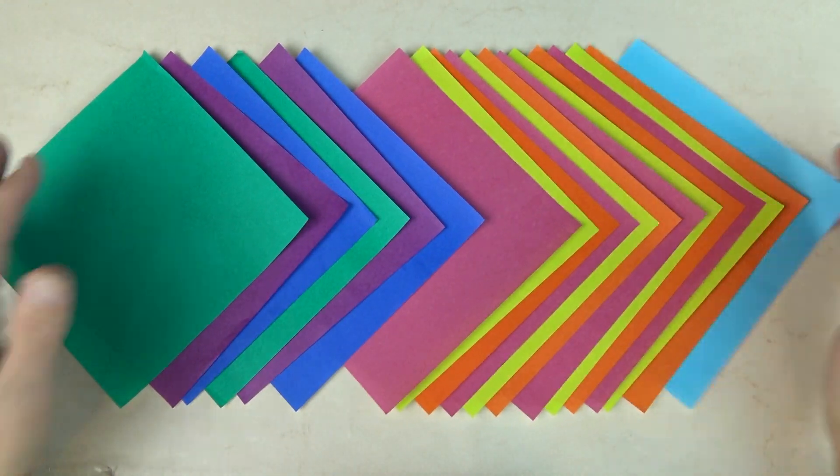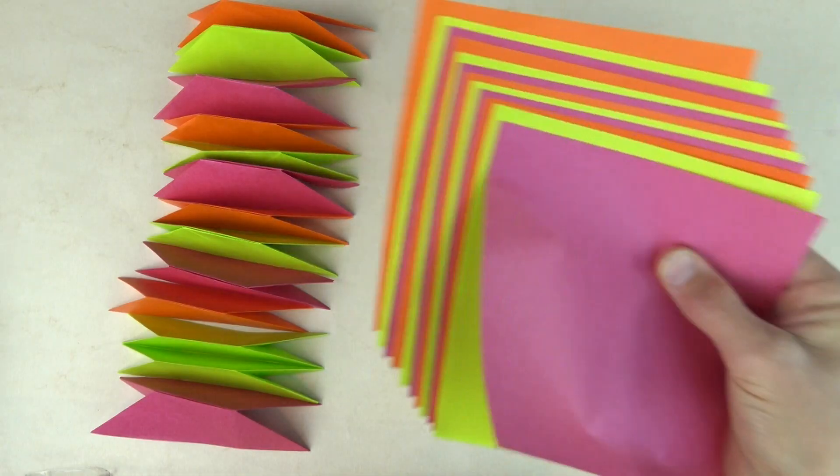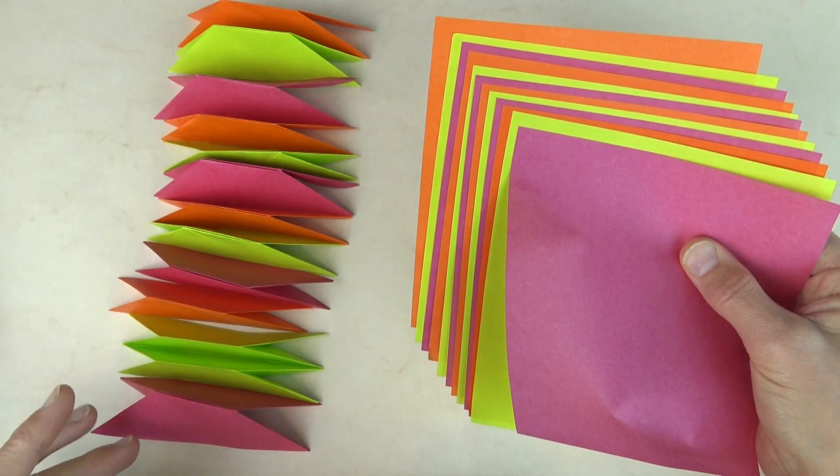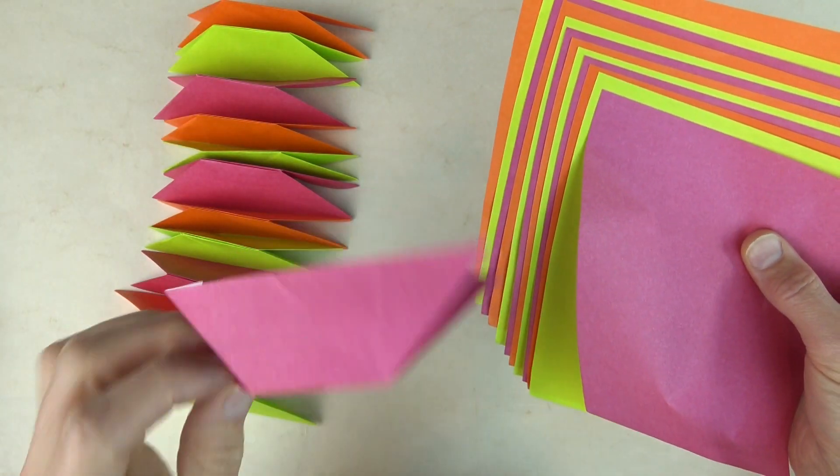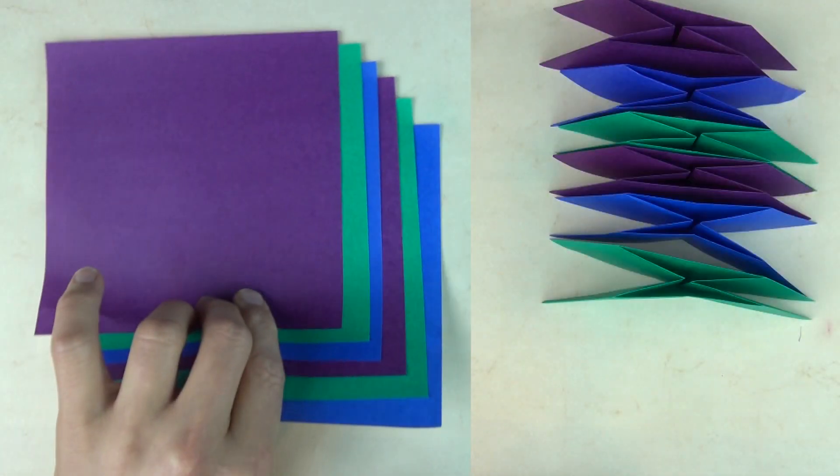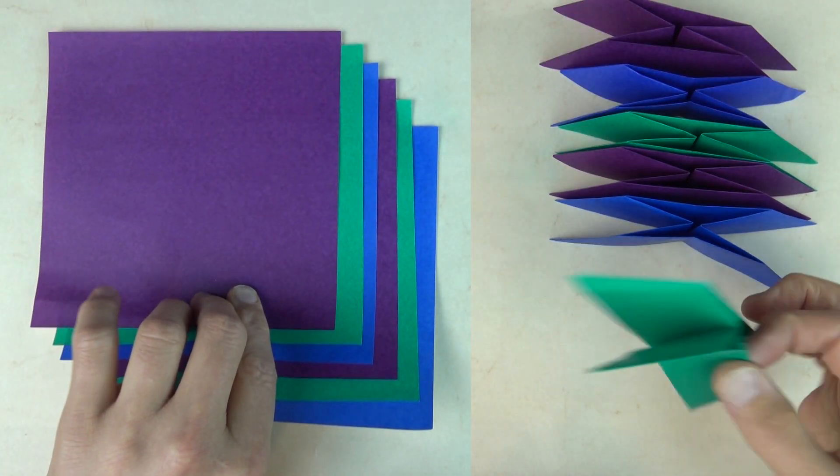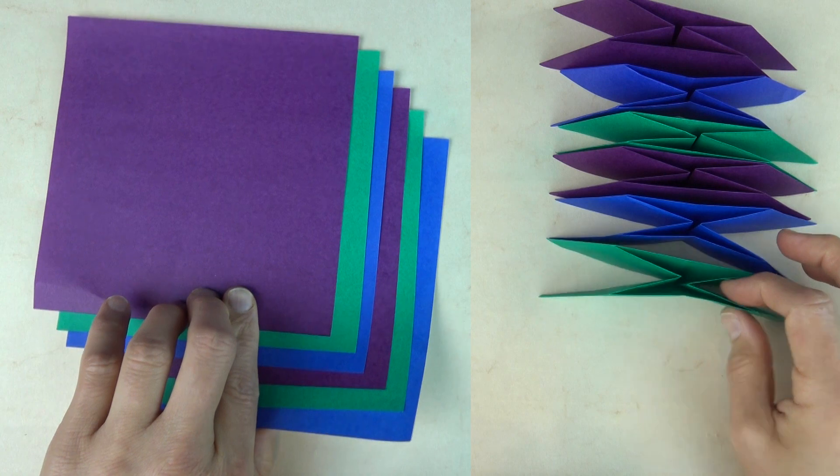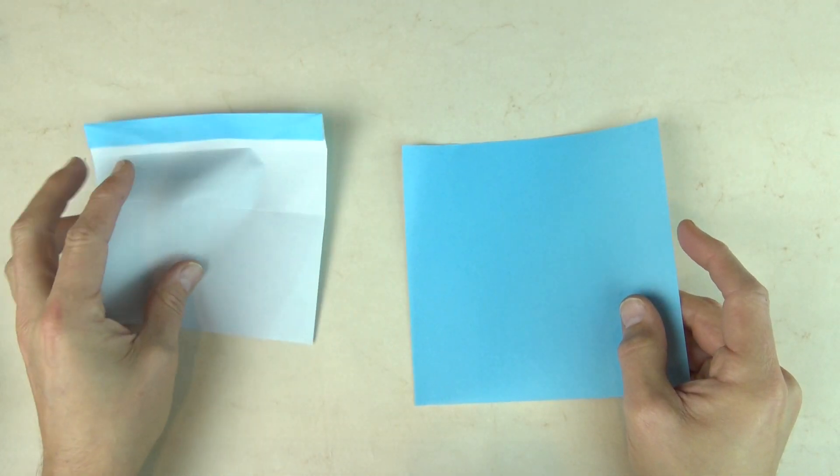So for this model you need 19 squares of paper. We need 12 squares for the 12 edge modules because an octahedron has 12 edges. And we need 6 squares for the 6 vertex modules because an octahedron has 6 vertices, in other words 6 points. And one sheet for the stencil which we'll use for the 12 edge modules.